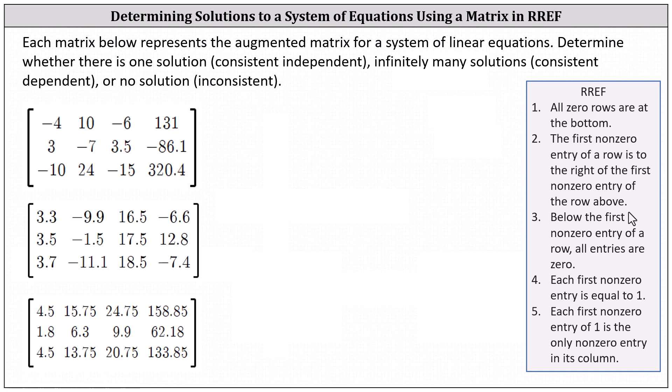Each matrix below represents the augmented matrix for a system of linear equations. Determine whether there is one solution, infinitely many solutions, or no solution. Notice each augmented matrix is a three by four matrix, which indicates each augmented matrix represents a system of three equations with three unknowns.